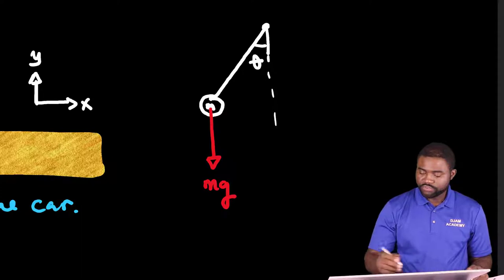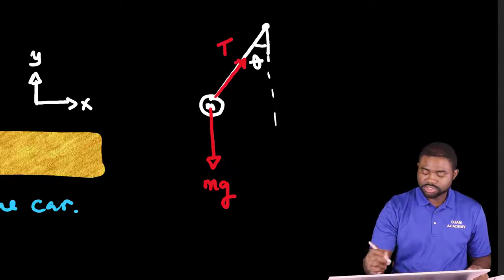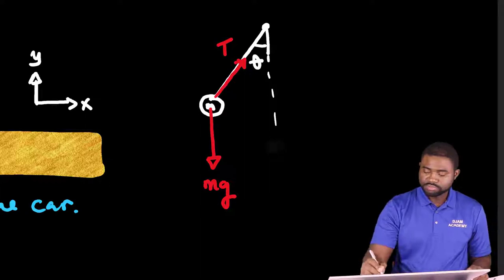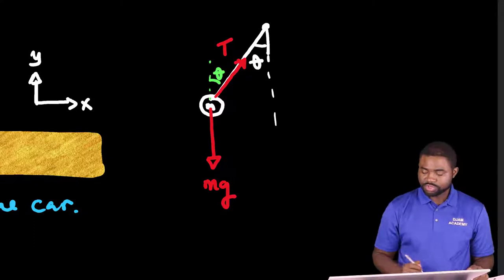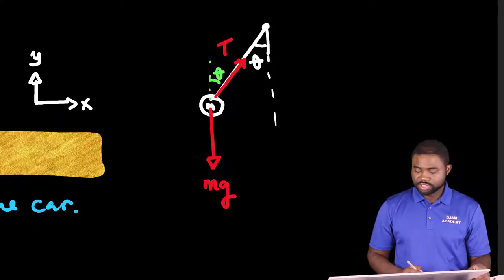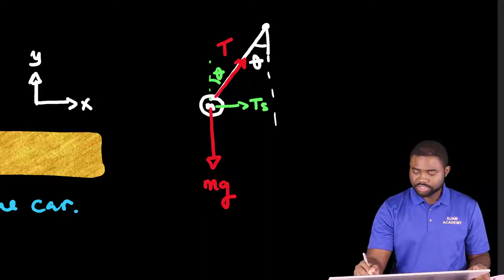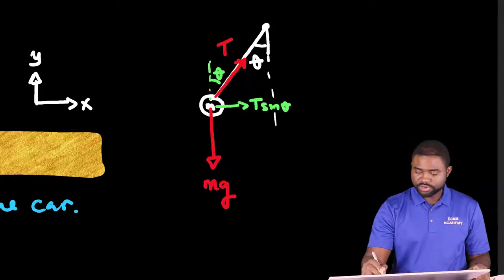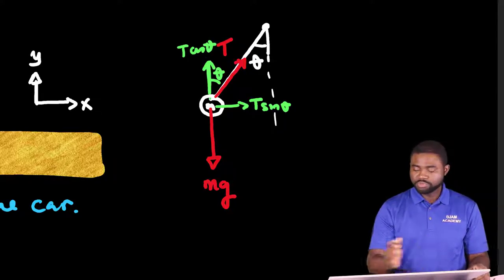The weight obviously acts vertically downwards. The tension in the string acts along the string and upwards. This angle right here is theta. So we can resolve the tension in the string into two components. This will be T sine theta and this will be T cosine theta. Now the system is moving forward.